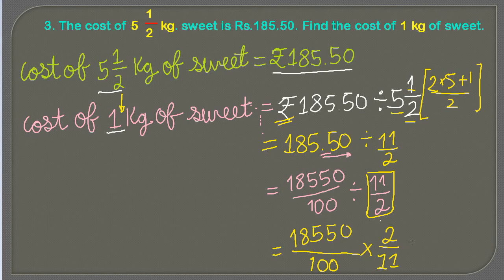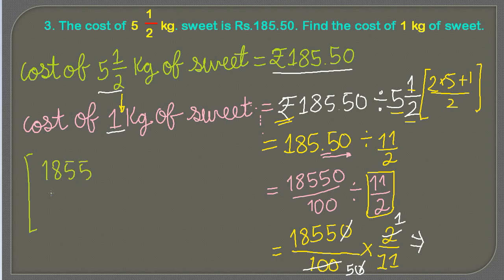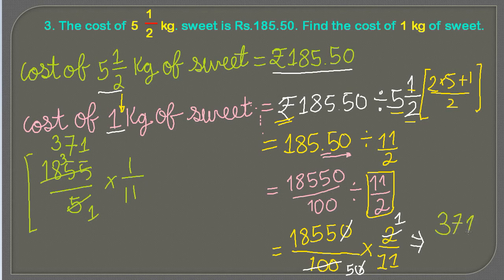Now we cancel the common factors. We see that 2 and 100 cancel — 100 divided by 2 gives 50. In the rough column, 18550 divided by 50 gives 371, and we are left with 371 multiplied by 1, divided by 11. So the numerator is 371 and the denominator is 11.